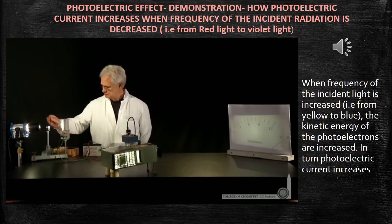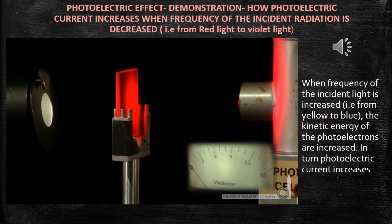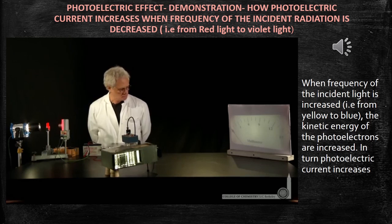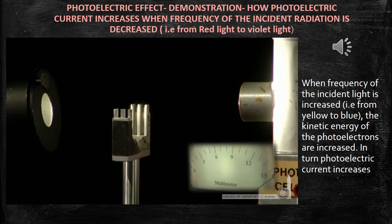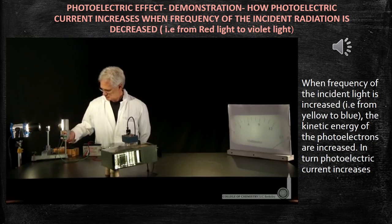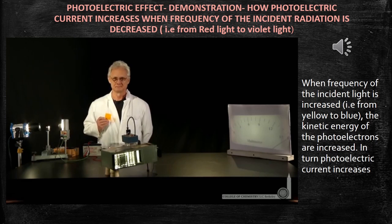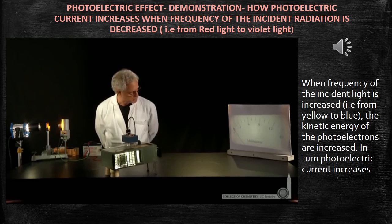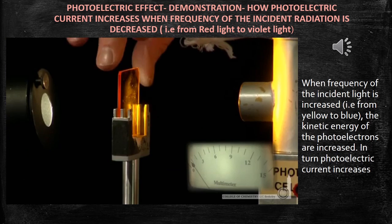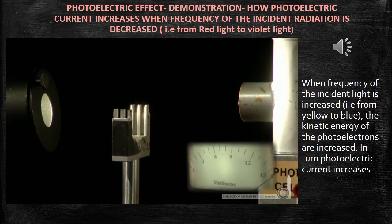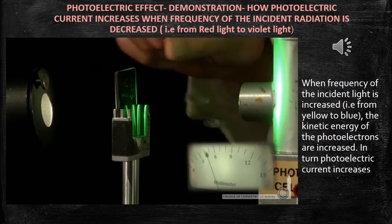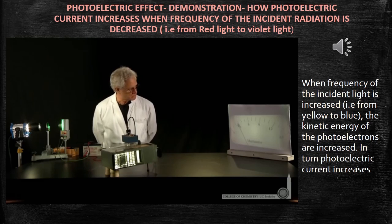The frequency is slowly increased by lowering the wavelength. After the yellow filter, the green filter is placed. When the green photon is made incident on the metal surface, more photoelectrons are emitted. The kinetic energy of the photoelectrons increases, and automatically the photoelectric current also increases. After the green filter, the blue filter is placed. Blue color photons have more energy than the green photons, so the kinetic energy of the electrons increases further.